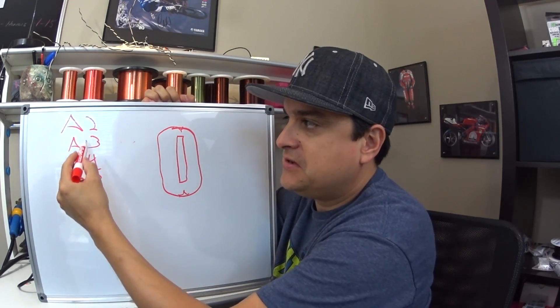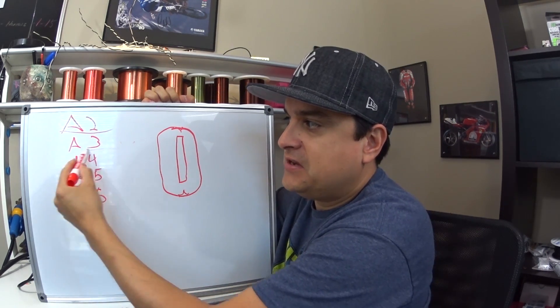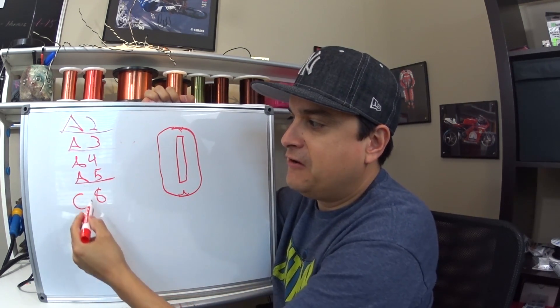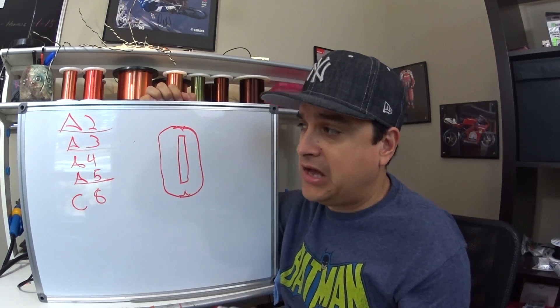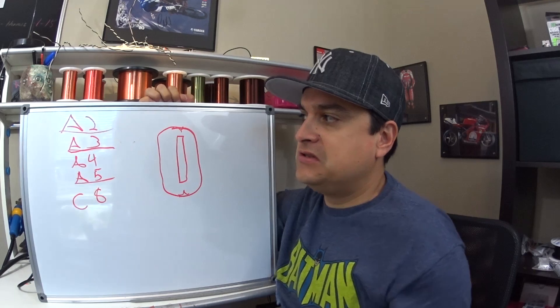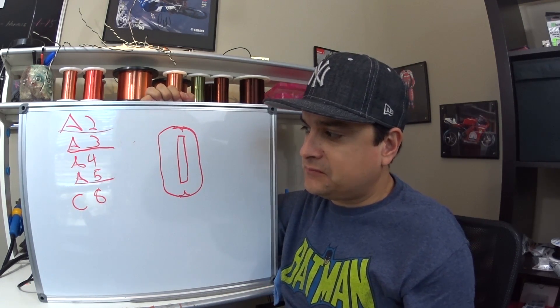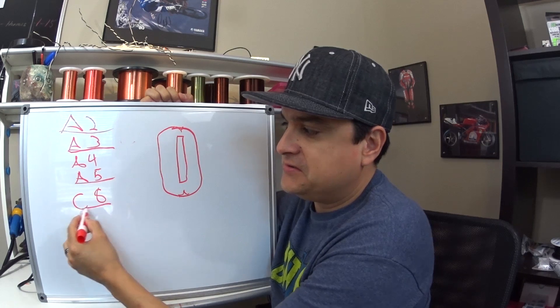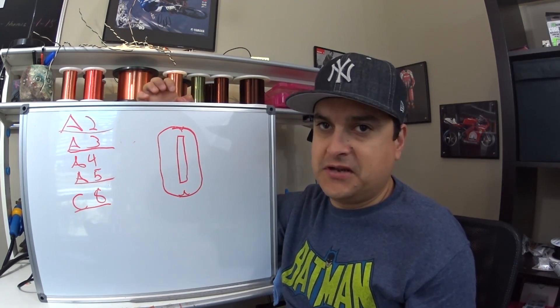The most commonly used are A2 pickups, Alnico 2 pickups, Alnico 3 pickups, and Alnico 5. Alnico 5 is probably the one you see most a lot, and then in modern stuff. And A3s are usually you see those a lot in older vintage stuff. The ceramic 8 pickups, you see a lot of times in super high output pickups that are used for like heavy metal and stuff.